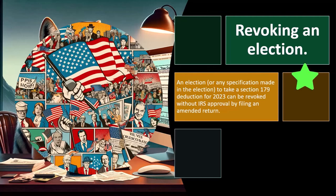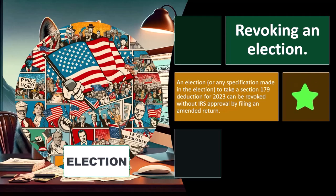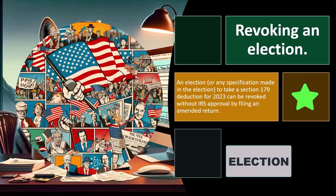An election, or any specification made in the election to take the Section 179 deduction for 2023, can be revoked without IRS approval by filing an amended return. So similar kind of process — you filed the return and made the election to take the 179 deduction, which...